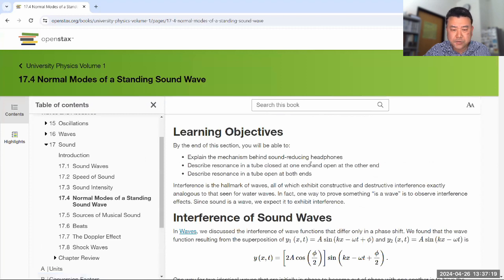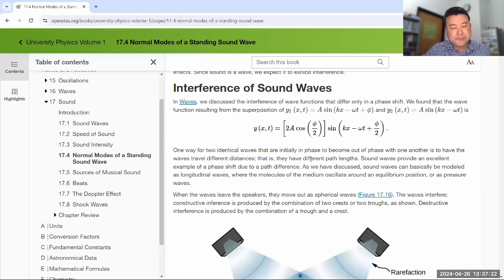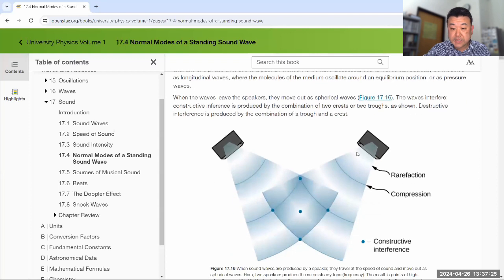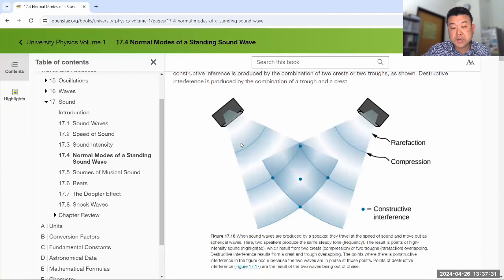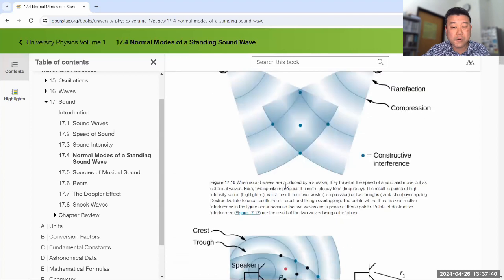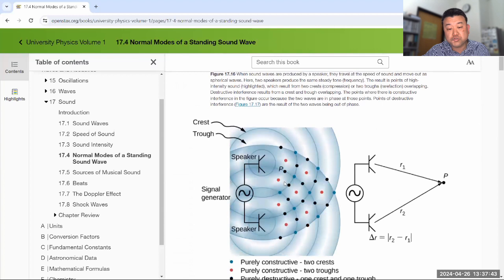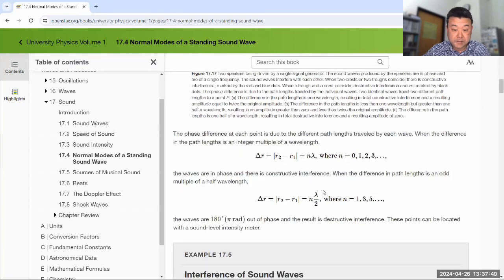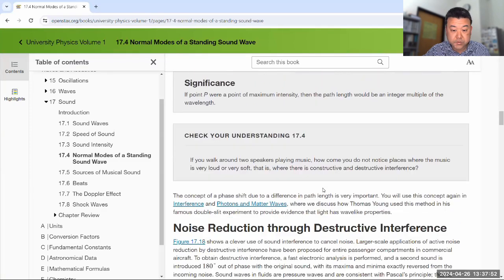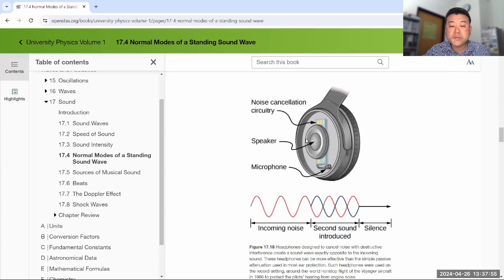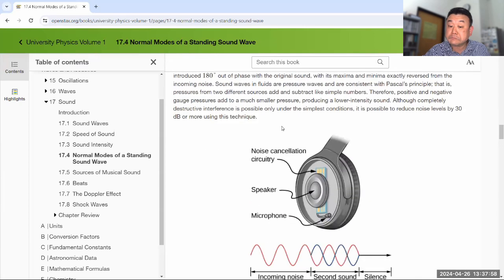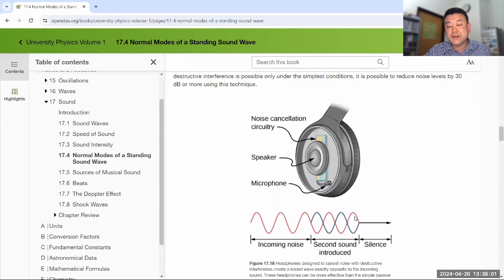This kind of interference in two dimensional space we reserve that for physics 4C. I think there is one lecture demo video that shows a demo with the ripple tank, but we don't do anything with it homework wise because we are saving this kind of two dimensional interference for physics 4C. There is another kind of interference that we do spend time on.